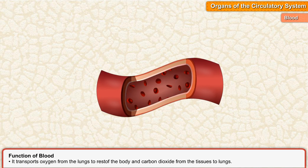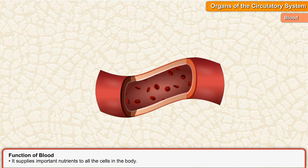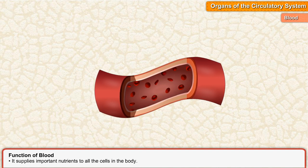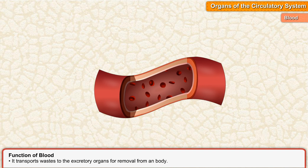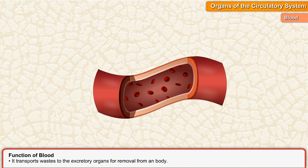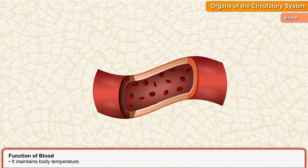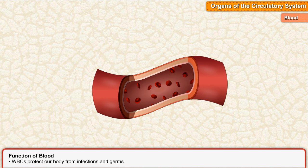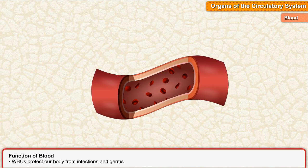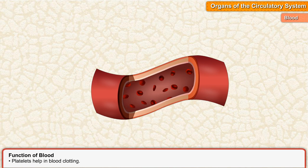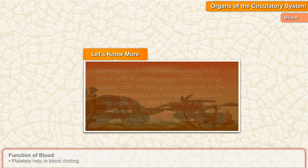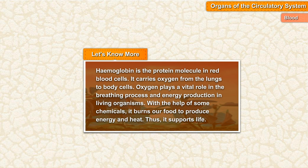Functions of blood: It transports oxygen from the lungs to the rest of the body and carbon dioxide from the tissues to the lungs. It supplies important nutrients to all the cells in the body. It transports wastes to the excretory organs for removal from the body. It maintains body temperature. WBCs protect our body from infections and germs, and platelets help in blood clotting.